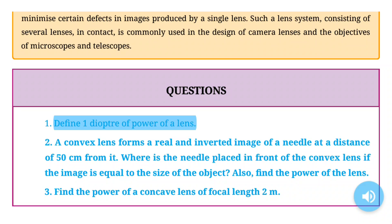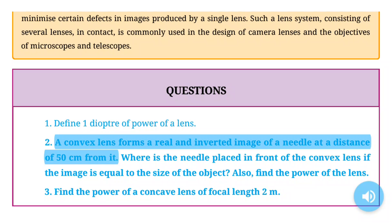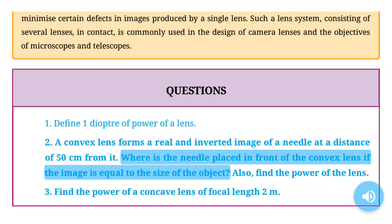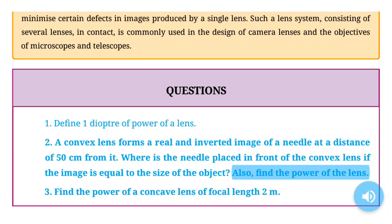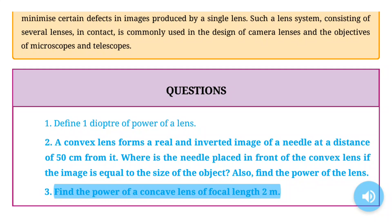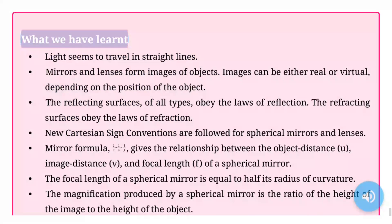Questions: (1) Define one diopter of power of a lens. (2) A convex lens forms a real and inverted image of a needle at a distance of 50 cm from it. Where is the needle placed in front of the convex lens if the image is equal to the size of the object? Also find the power of the lens. (3) Find the power of a concave lens of focal length 2 m.